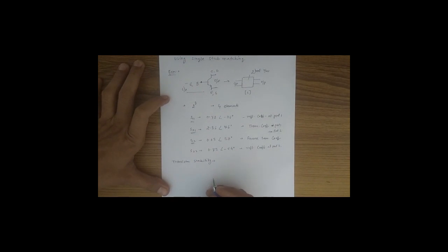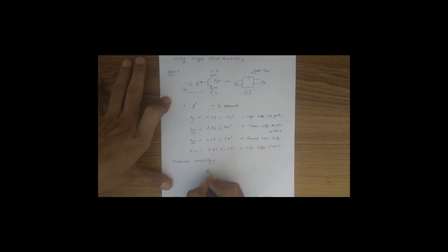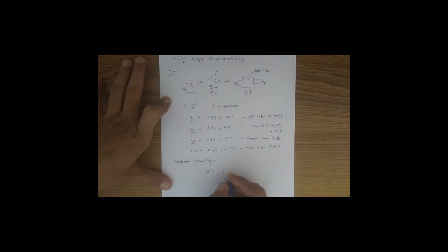After verifying the S-parameters, we check transistor stability. To claim a transistor is unconditionally stable, there are two parameters. The first is the determinant delta, which is S11·S22 − S12·S21. Since we know all four S-matrix elements, we can easily calculate the determinant.